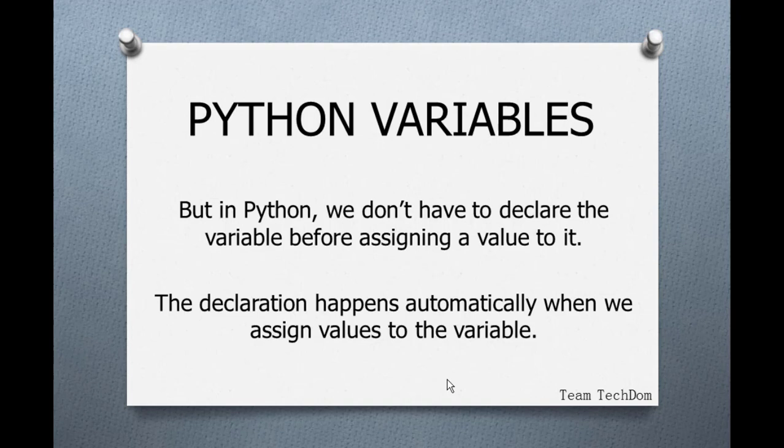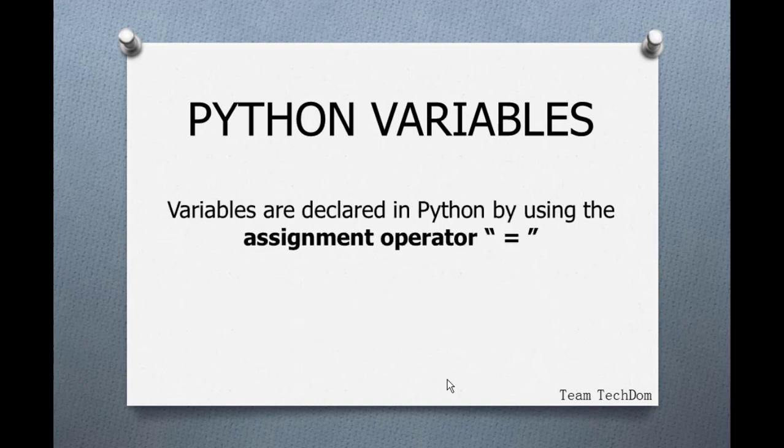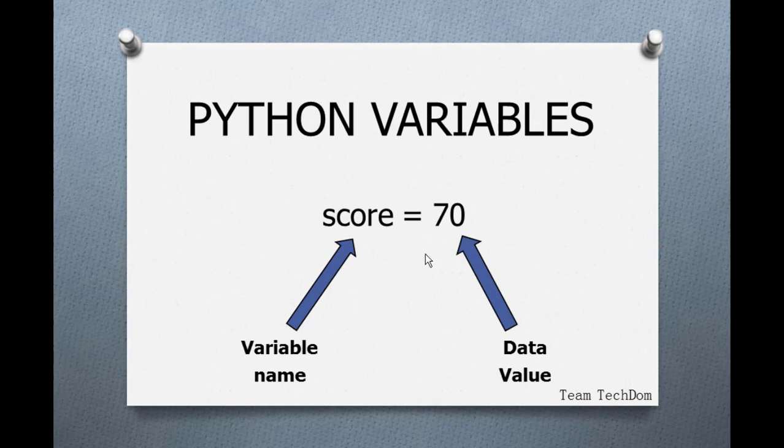But what we realize is that in Python, that is not the case. We don't have to declare the variable before assigning a value to it. The declaration happens automatically when we assign value to that variable. Variables are declared in Python by using what we call the assignment operator, and that is this equal to sign. This is a typical example of how we declare a variable in Python. We don't have to specify the data type. Python is smart enough to recognize the data type or whatever data value you're going to be storing in the variable. So all you need to do is just specify the variable name, then the assignment operator, and the data value you want to store in the variable. The variable name is usually on the left hand side while the data value is on the right hand side.